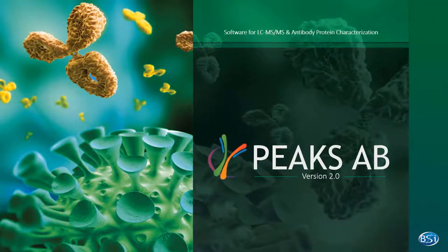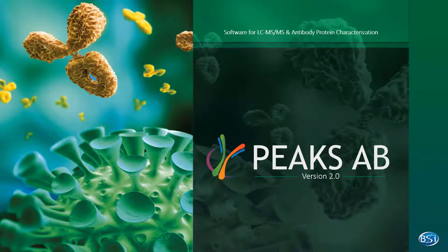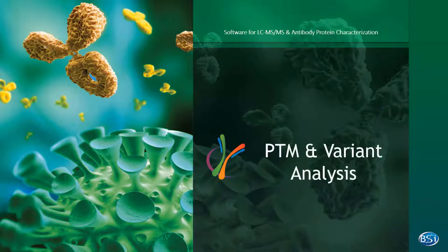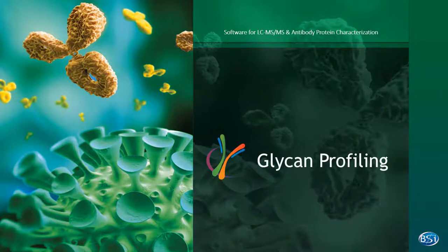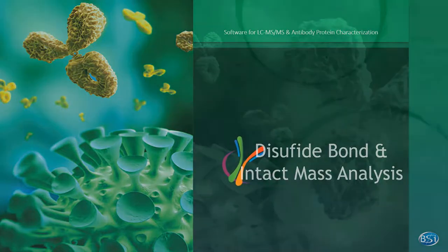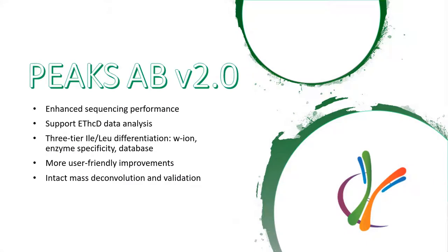Thank you for watching this short video about new features in PICS-AB version 2.0. PICS-AB is a software tool for antibody protein characterization, including de novo antibody protein sequencing, PTM and variant analysis, glycan profiling, disulfide bond and intact mass analysis. The first version of the software was released January 2017. In our latest 2.0 version, we have these updates.